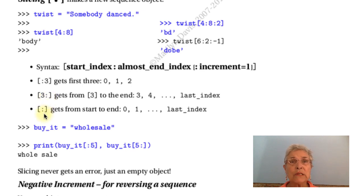You can skip them both, and that's going to give you a slice from the beginning to the end. But the important thing about that slice is that it copies out the data, and it gives you a new sequence with the data copied into it. Here I'd like to show you this. Buy it equals wholesale. If I say buy it up to five and buy it from five on, that's all the characters in wholesale. I didn't have to think about minus one goes where. Unlike accessing, which can give you an index error, slicing will never give you an error. It might give you the empty object.